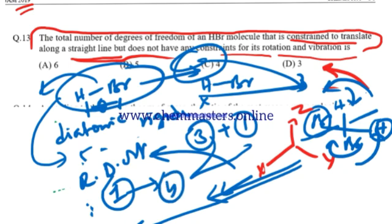Option C is the correct answer. To get complete information about degrees of freedom, visit chemmasters.online. Get registration and join the best online courses for guaranteed success. Thank you very much.